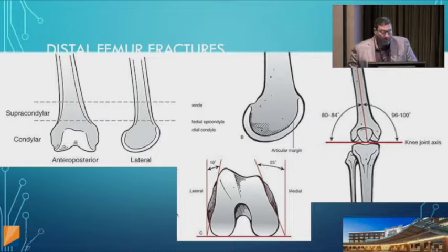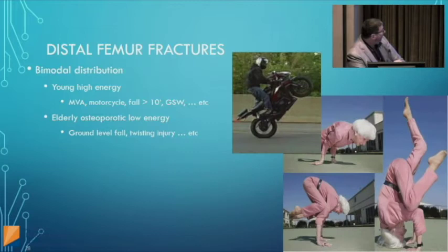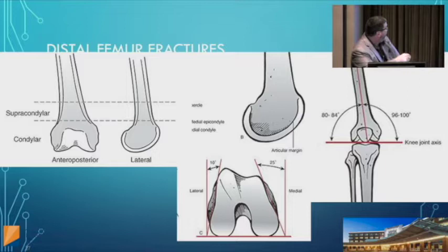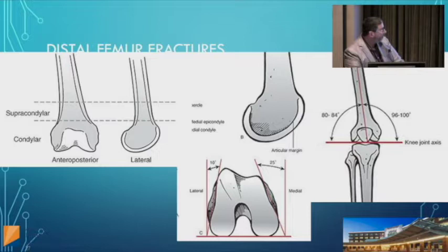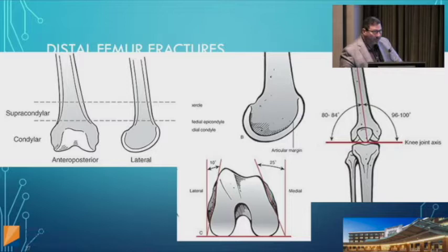Distal femur fractures have a bimodal distribution: young patients with high-energy injuries from motor vehicle accidents or motorcycles, and elderly patients with relatively low-energy injuries. The distal femur has two areas: the supracondylar region above the condyles, and the medial and lateral femoral condyles. Its shape matters surgically — it's narrower anteriorly than posteriorly, and plate placement location affects alignment depending on the manufacturer's design.